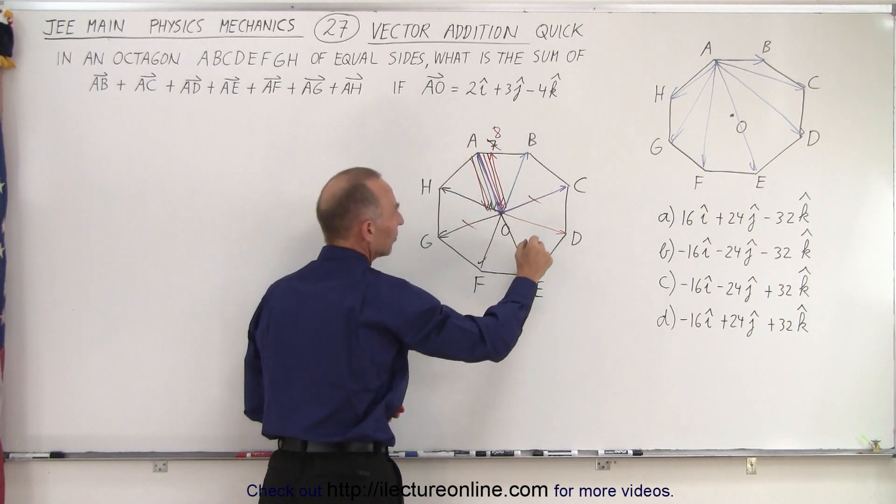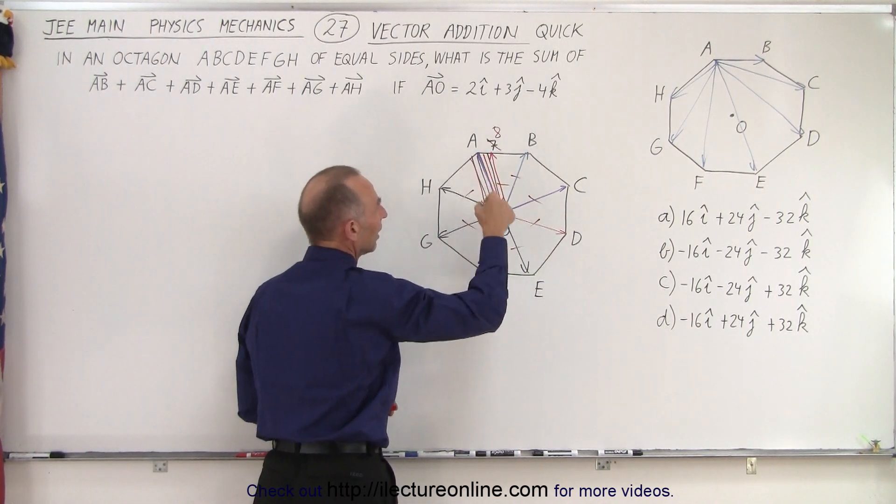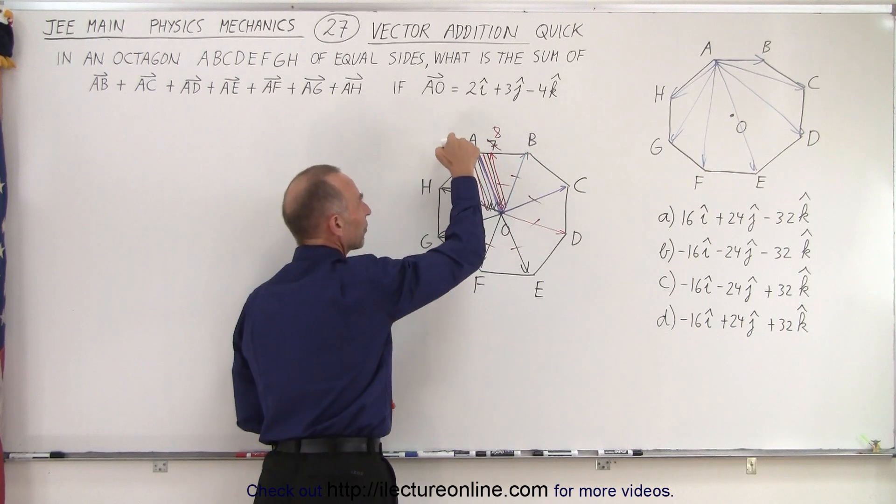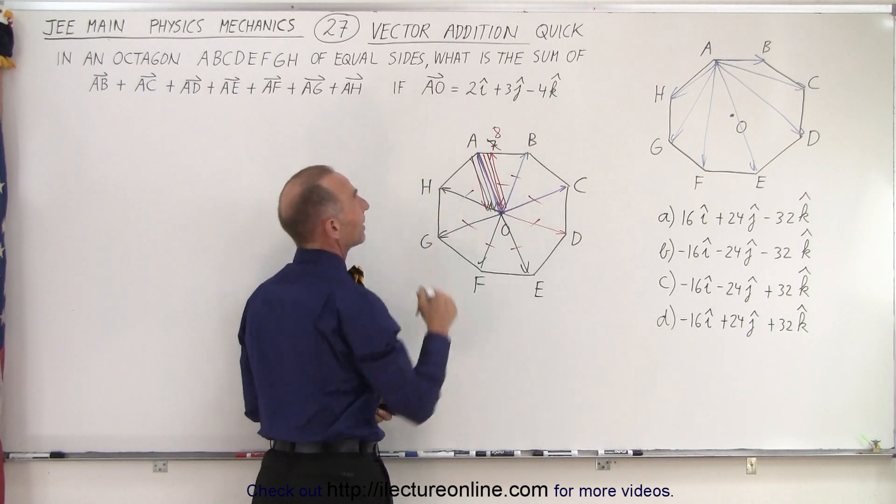This vector cancels out this, this vector cancels this, this vector cancels that, this vector cancels this one. And now we have eight vectors going from A to O. So we have eight times this to get the answer.